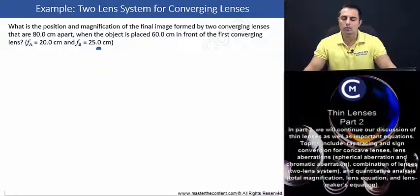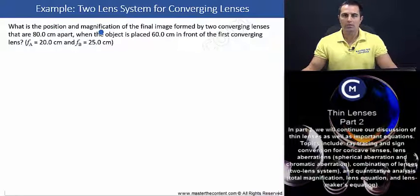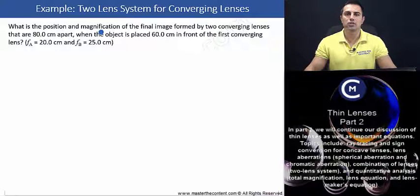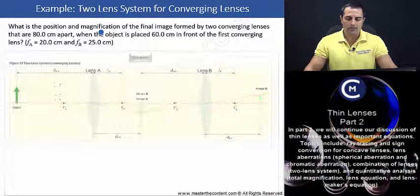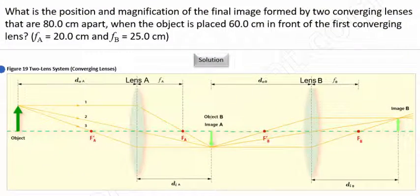What we'll do is we'll first go ahead and find the position, and then we'll proceed and find the magnification. I'll encourage you to attempt to solve the problem independently; otherwise, you're more than welcome to follow along. Let's begin by taking a look at figure 19 and really understand what's taking place. Note that this drawing is not to scale, but its approximation is good enough for us to understand what is taking place.